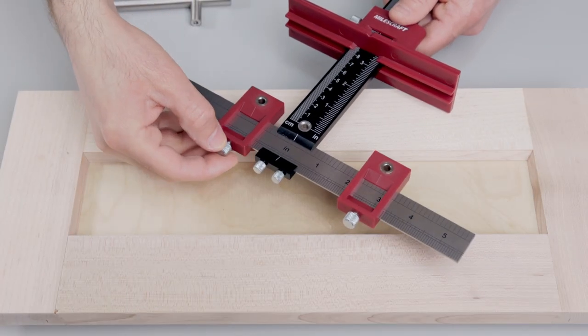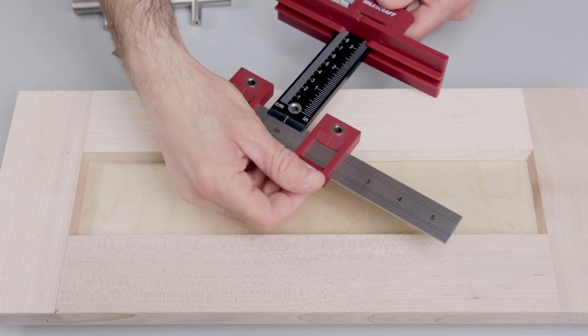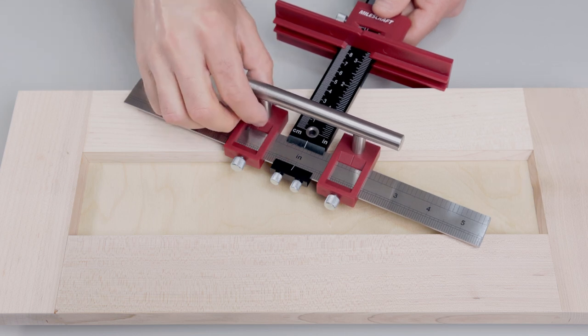Two sliding drill guides adjust on the centered ruler to match the width of your hardware, or use the main drill guide on the ruler to place a centered hole for individual knobs.